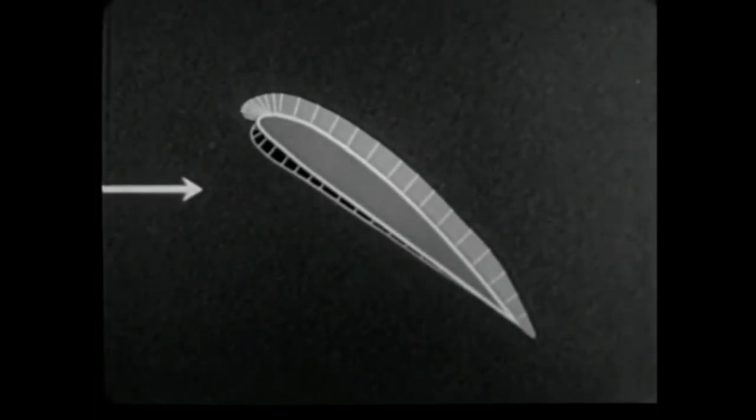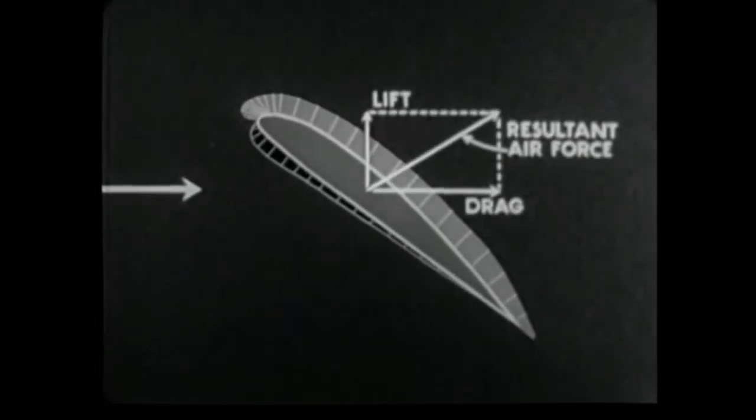It might appear from this diagram that at this angle of attack, the uniform pressure distribution over the upper wing surface would be desirable. However, above the stalling angle, the resultant air force acts in such a direction that the drag is its large component.